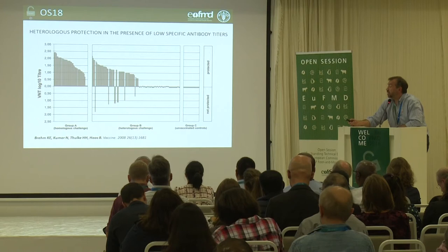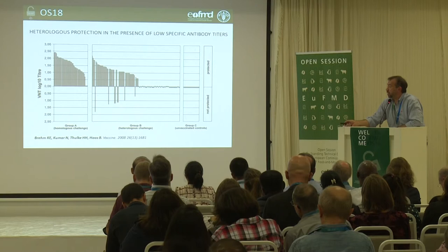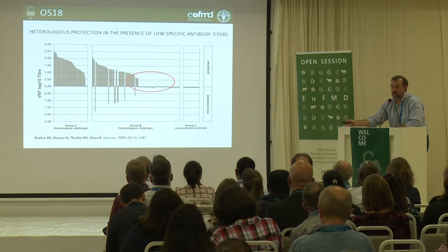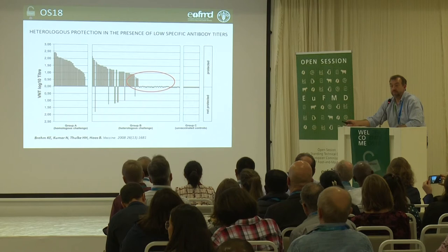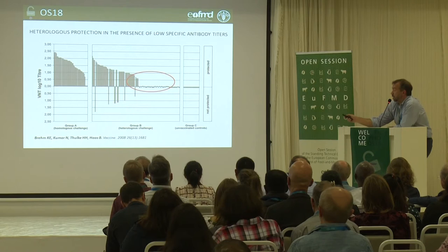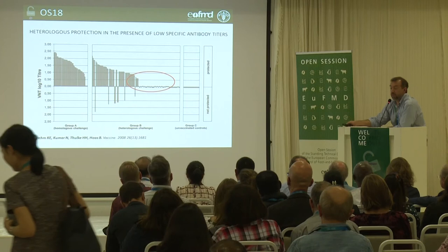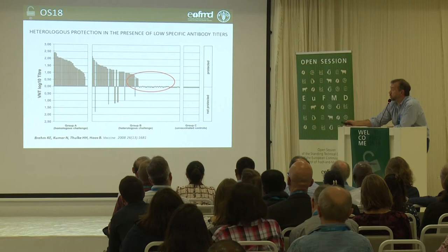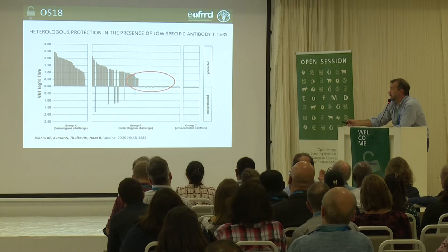This paper has been referred to multiple times already. They challenged animals that had extremely low levels of VNT — nevertheless, many of them were protected. That's the question: why? Probably the low level of VNT is the reason the r1 values were somewhat biased or not very accurate in assessing how this heterologous protection would turn out.